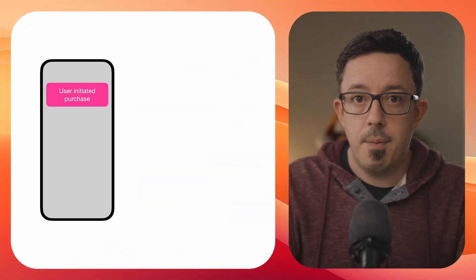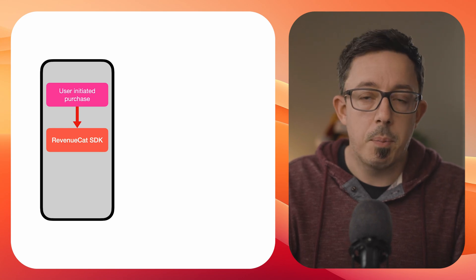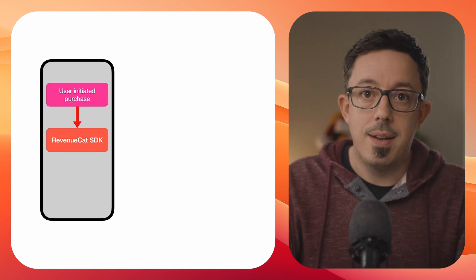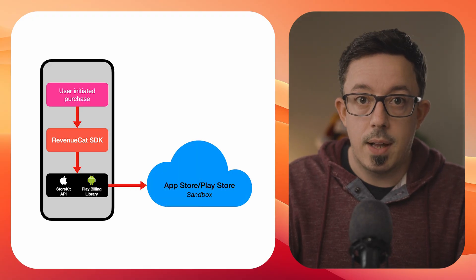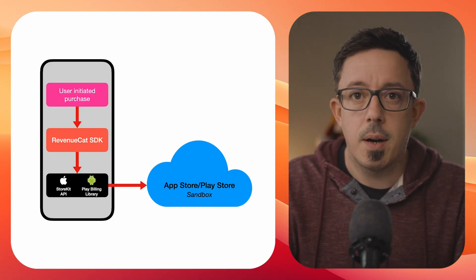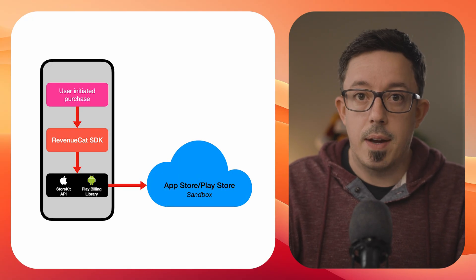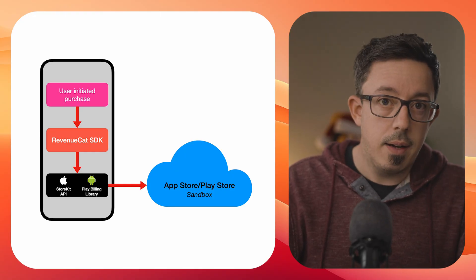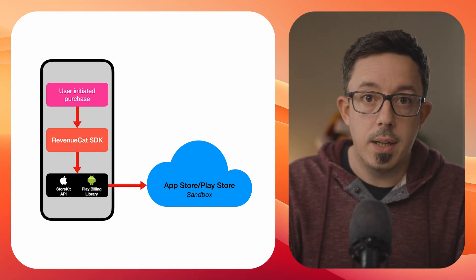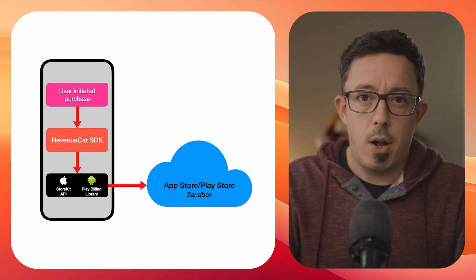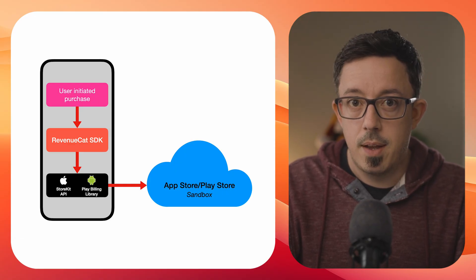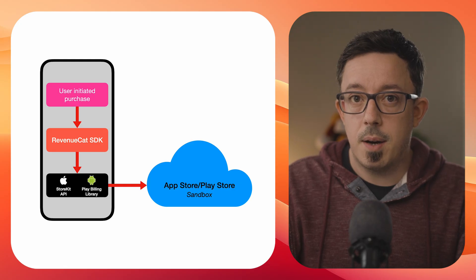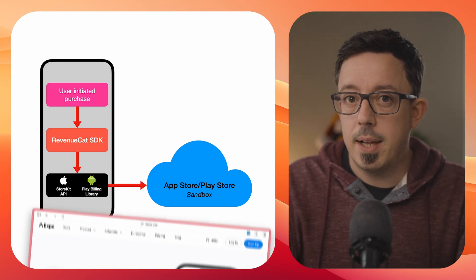When you make a purchase in the app using the RevenueCat SDK, even in the simulator or debug build, the SDK will call the native in-app purchase flow, which will then call out to the real App Store in a sandbox environment in order to create that fake purchase. Which is nice in that it's testing your app fully, but it's a burden to set all of this up before you can even test how your app handles purchases.